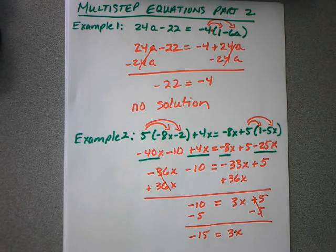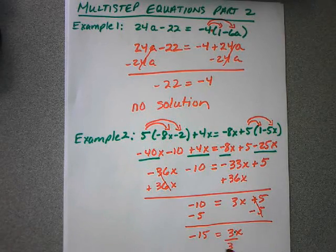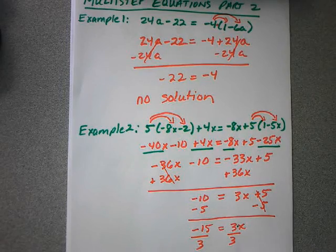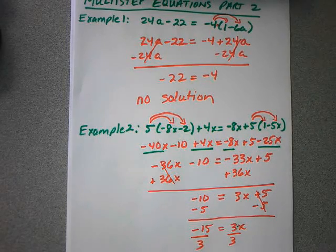Last step, there is an invisible multiply there, so to get rid of that invisible multiply, I divide both sides by 3, and I end up with x equaling negative 5.